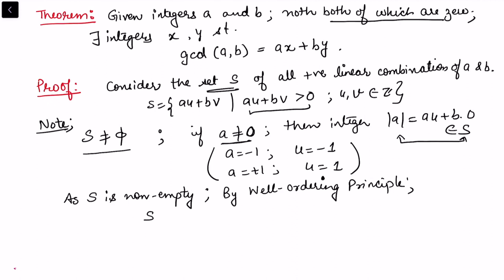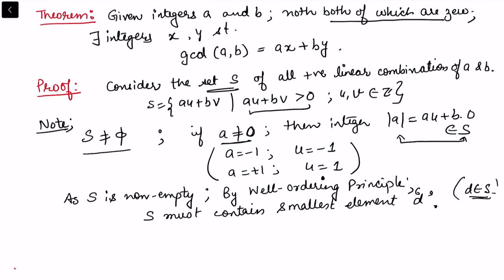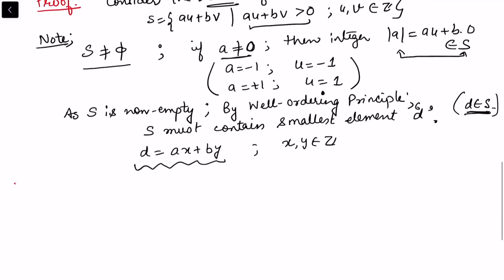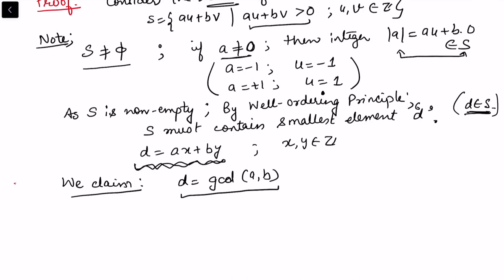As S is non-empty, by the well-ordering principle S must contain a smallest element. Call that smallest element d. Since d belongs to S, it must be of the form d = ax + by for some integers x, y. We claim that d is the gcd of a and b. If we can show this, we will have shown that d can be written as a linear combination, proving our result.